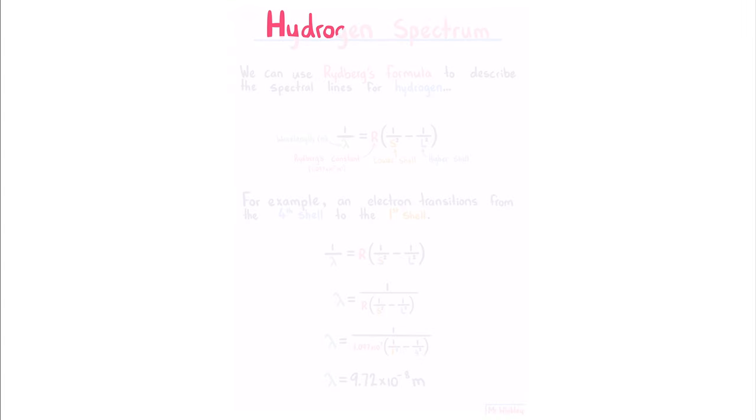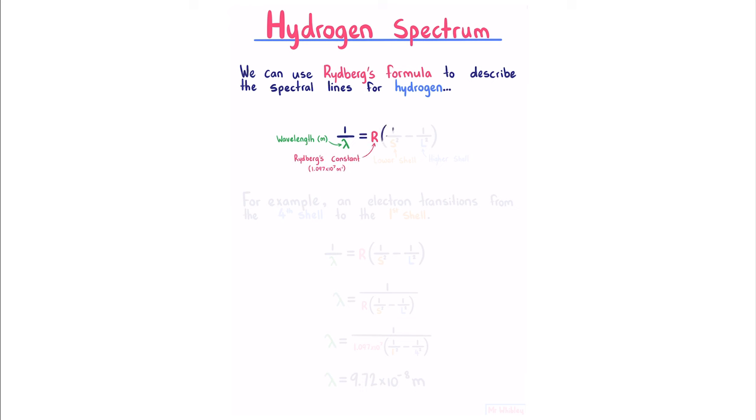Hydrogen spectrum. We're using Rydberg's formula to describe the spectral lines for hydrogen, where 1 over our wavelength is equal to Rydberg's constant multiplied by 1 over our lower shell squared minus 1 over our higher shell squared.